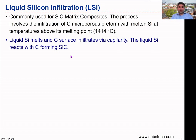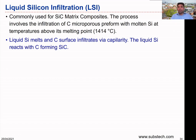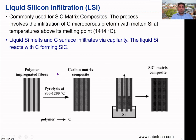The liquid silicon melts and infiltrates the carbon surface via capillary reaction. The molten silicon infiltrates via capillary reactions into the preform, and then the liquid silicon reacts with the carbon, forming silicon carbide. This reaction forms the matrix material — the molten silicon reacts with the carbon and produces the silicon carbide matrix on top of the reinforcement or fiber structure.